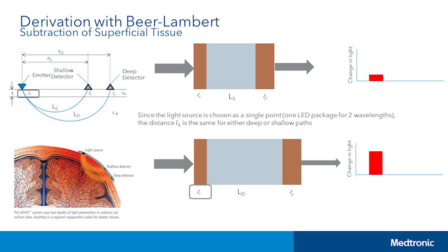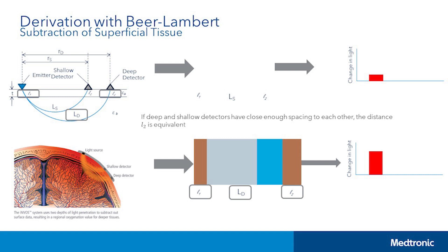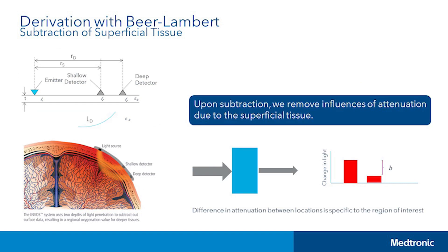What's important to note is: one, since the light source is chosen as a single point, we have one LED package for two wavelengths, and the distance L1 is the same for either deep or shallow paths. Two, the path length for the more distant detector will travel deeper through the tissue based on scattering. And three, if deep and shallow detectors have close enough spacing to each other, the distance L2 is equivalent. So, if we were to overlay these boxes, we'd see that they only differ in that the further detector samples more of the deeper tissue, represented by this blue box. In other words, INVOS takes the signal measured from the further detector — the deep detector — and subtracts out the signal from the shallow detector, to be left with a signal that's influenced only by the tissue of interest without any contamination from the superficial tissue.